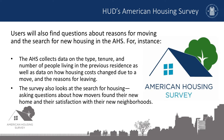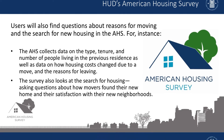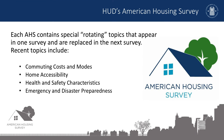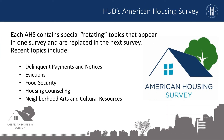Users will also find questions about reasons for moving and the search for new housing in the AHS. The AHS collects data on the type, tenure, and number of people living in the previous residence, as well as data on how housing costs change due to a move and the reasons for leaving. The survey also looks at the search for housing, asking questions about how movers found their new home and their satisfaction with their new neighborhoods. Each AHS also contains special rotating topics that appear in one survey and are replaced in the next, such as commuting costs and modes, home accessibility, health and safety characteristics, and emergency and disaster preparedness. The AHS has also included topical modules on delinquent payments and notices, evictions, food security, housing counseling, and neighborhood arts and cultural resources.